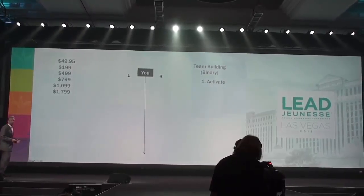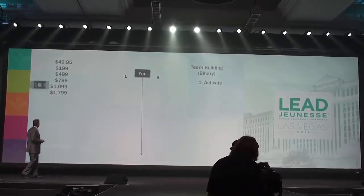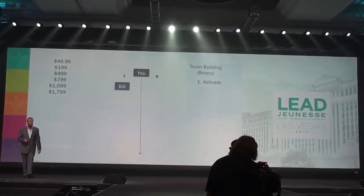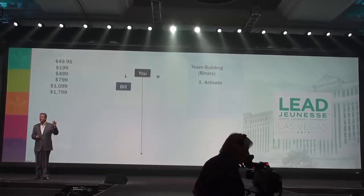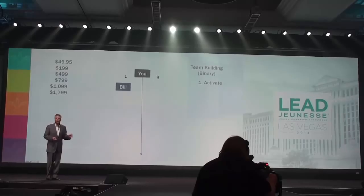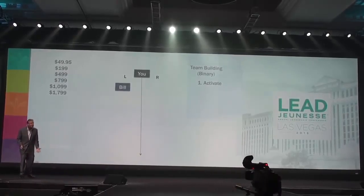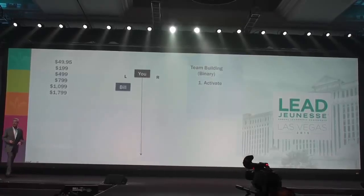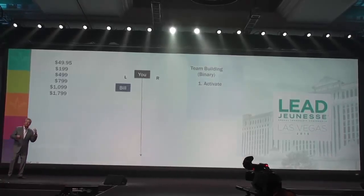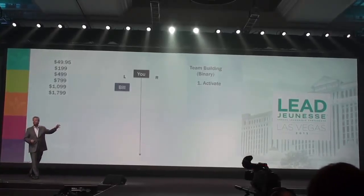So we're going to start building our community. Let's say you have a friend, Bill. You've known Bill for 20 years. You're shooting him the two-minute Instantly Ageless video — you just text him the video. Bill calls you and says, 'In two minutes?' He goes to your website and signs up. Now you can place Bill either on your left or right team. Let's say you place Bill on the left team. What's the first thing Bill's got to do? Activate.